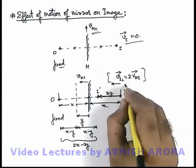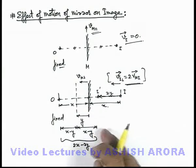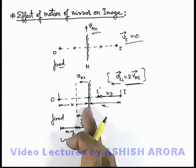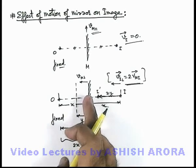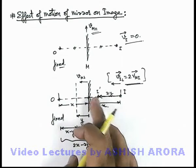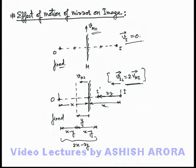So we must be careful about this relation that if mirror is moving perpendicular to itself with a velocity v, the image will move in the same direction with the velocity twice the velocity of mirror.